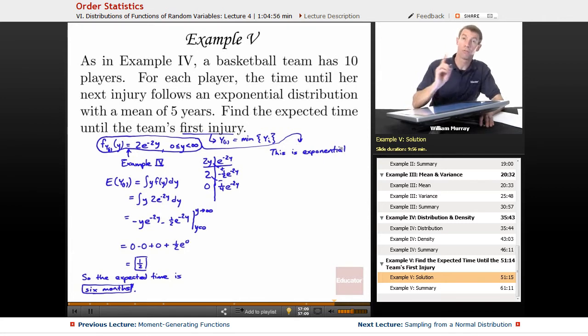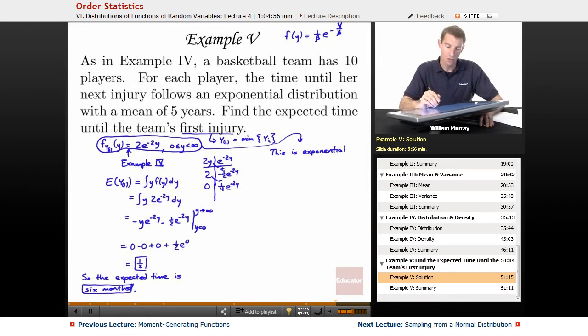Let me remind you of the form of an exponential distribution. It has density function f of y equals 1 over beta e to the negative y over beta. That's the density function for an exponential distribution. What we have is something that exactly matches that if we take our beta equal to one half, because one over one half is exactly two. So, we have an exponential distribution here.